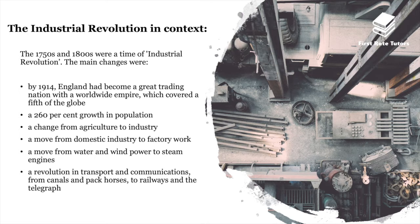The 1750s to 1800s were a time of huge revolution and industrial change. The main changes were: by 1914 England had become a great trading nation and worldwide empire, covering a fifth of the globe. There was a 260% growth in population. There was a shift from domestic industry — cottage work done by individuals and families — to mass production in factories. There was also a move from water and wind power to steam engines, and a revolution in transport from canals and pack horses to railways and the telegraph.